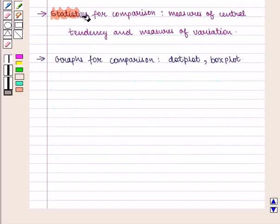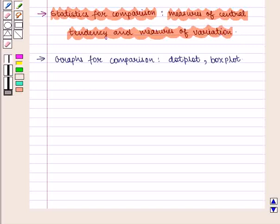Statistics for comparison are measures of central tendency and measures of variation. Also graphs for comparison are dot plot and box plot.